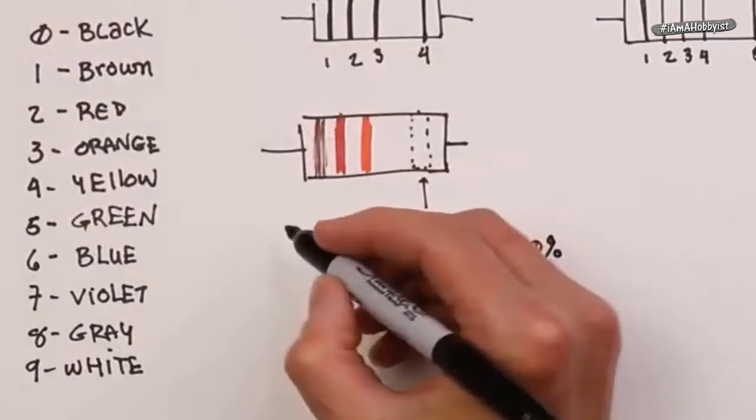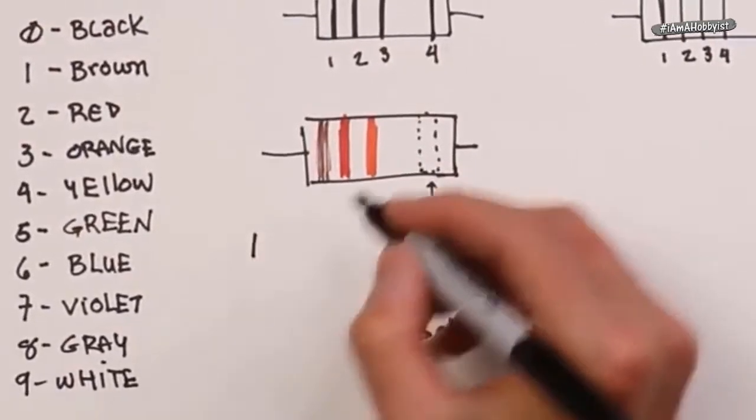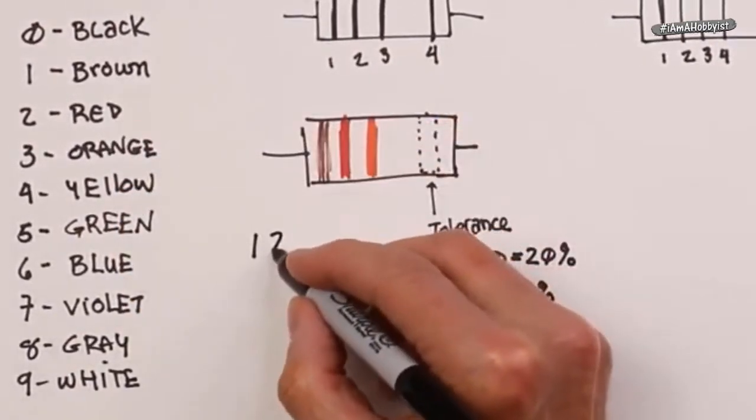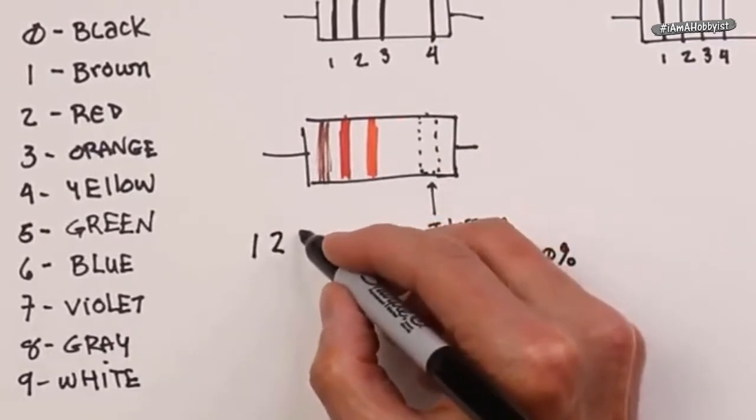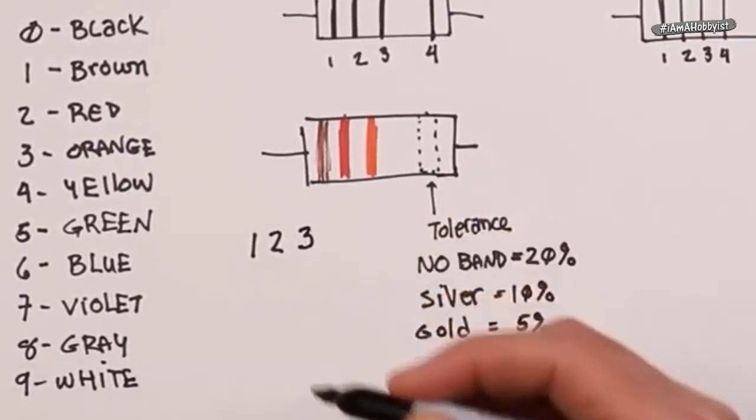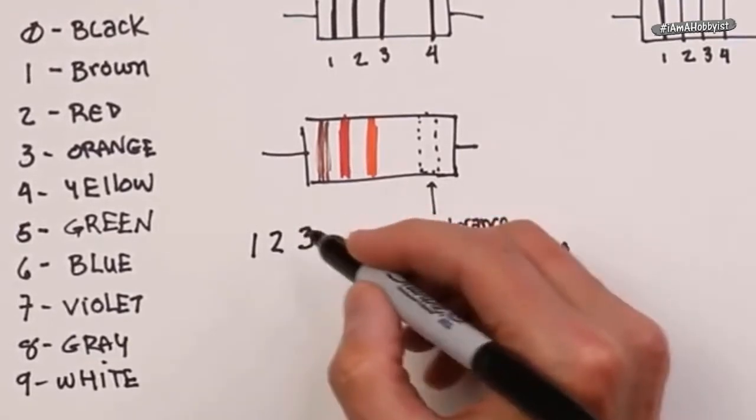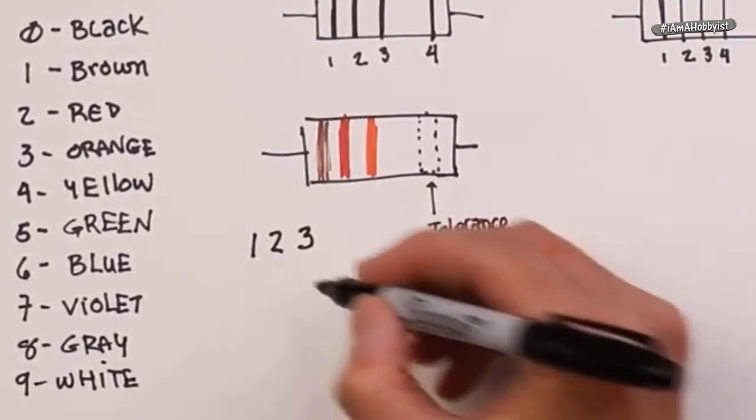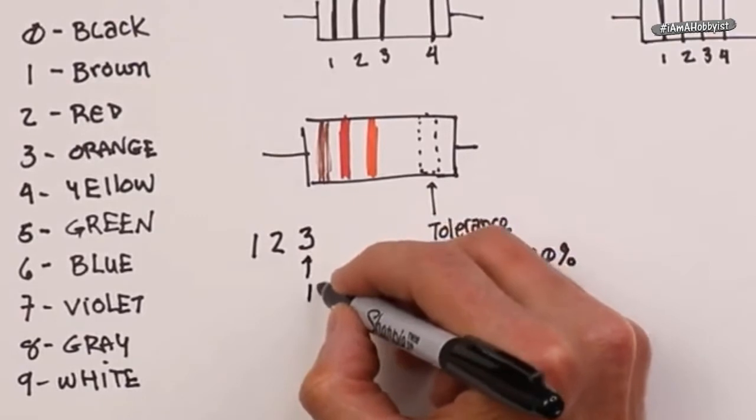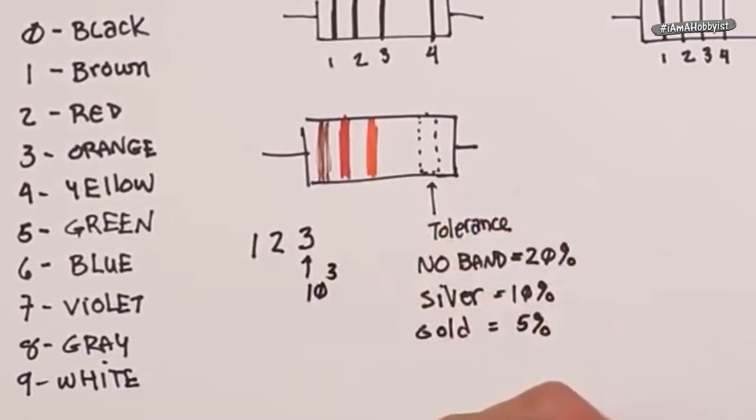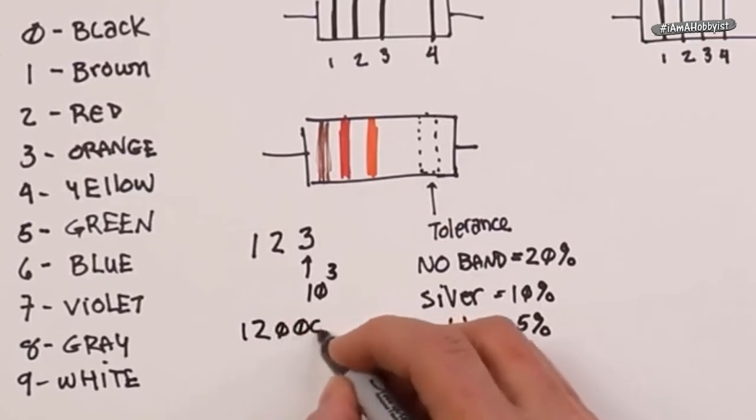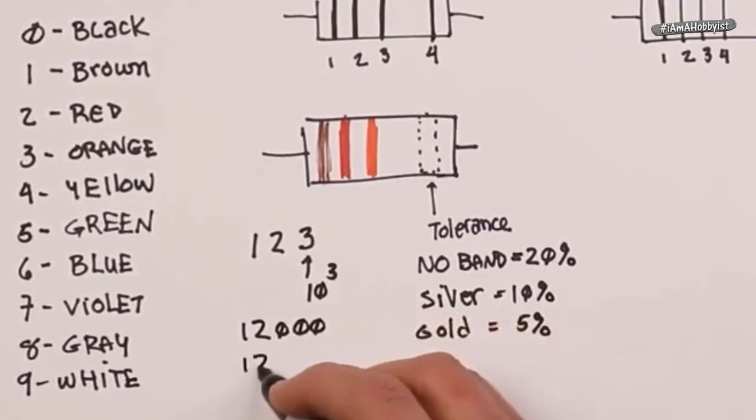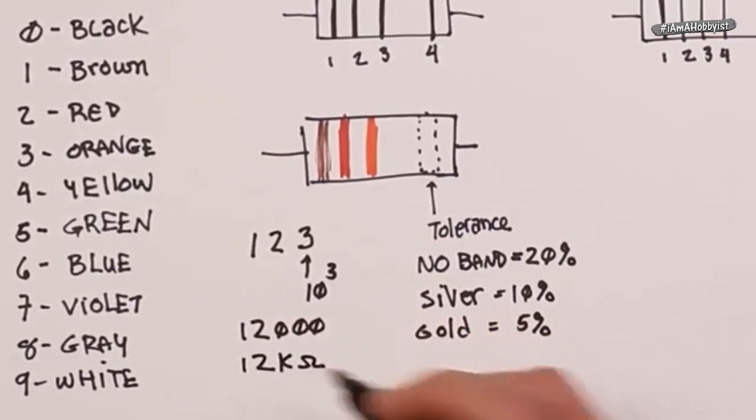Well, brown is 1, red is 2, orange is 3. So is this 123 ohms? No, it's not. The 3 is a power of 10. In other words, this literally means 10 to the third or three zeros. So you're saying it's 1, 2, 0, 0, 0. In other words, this is 12 k ohms.